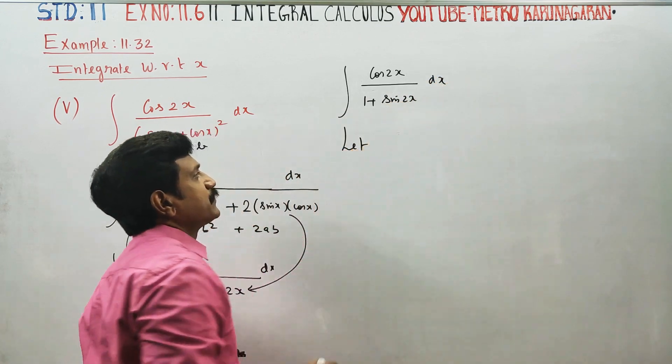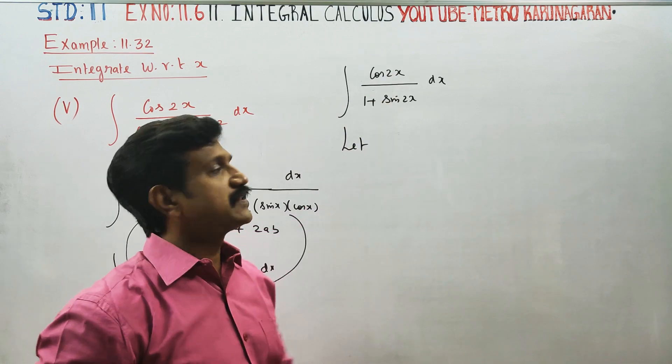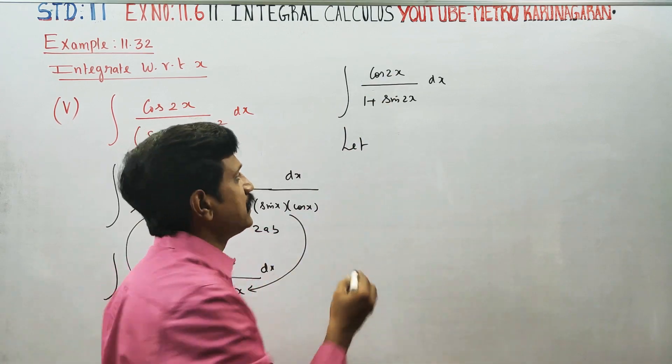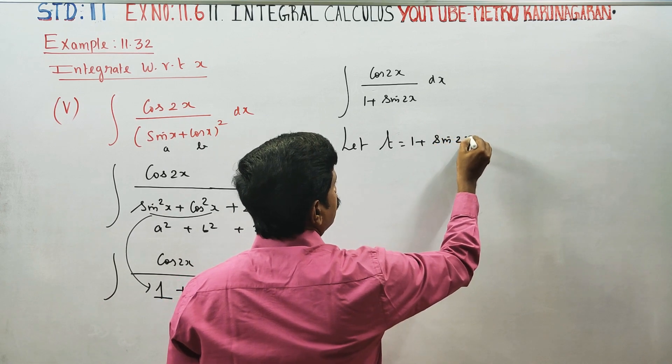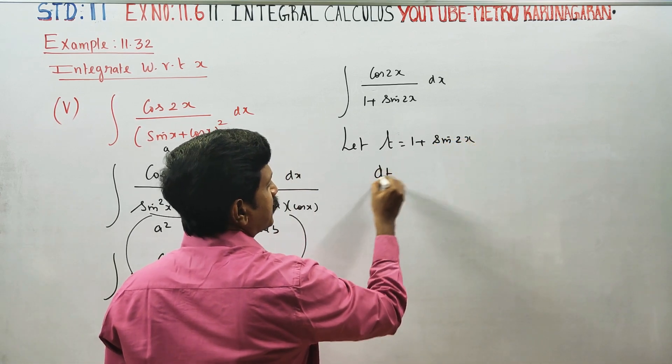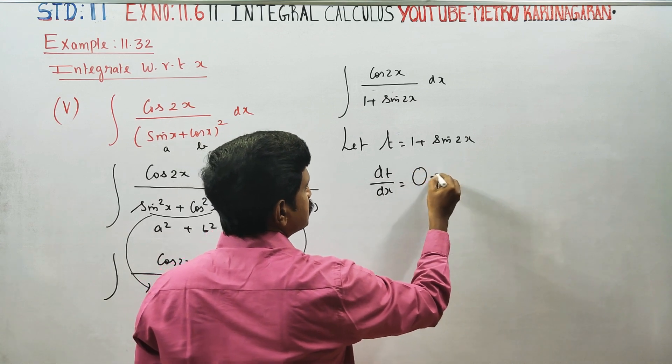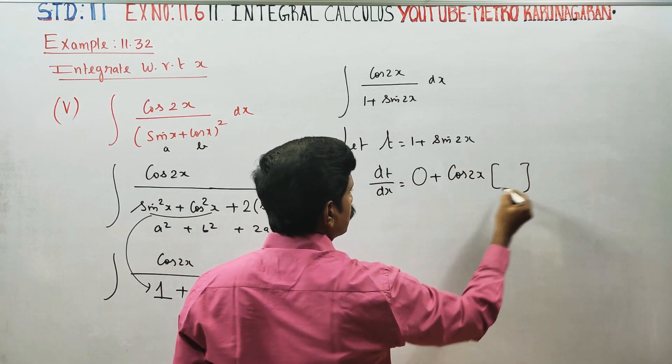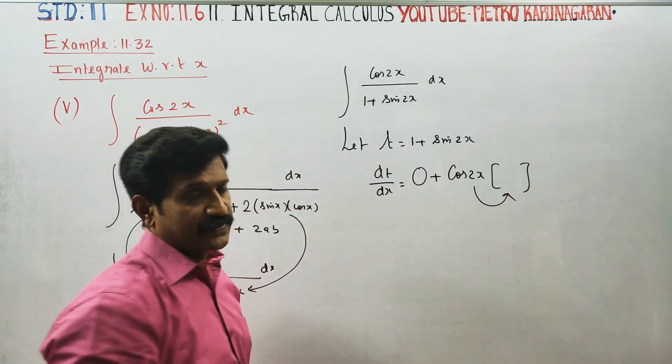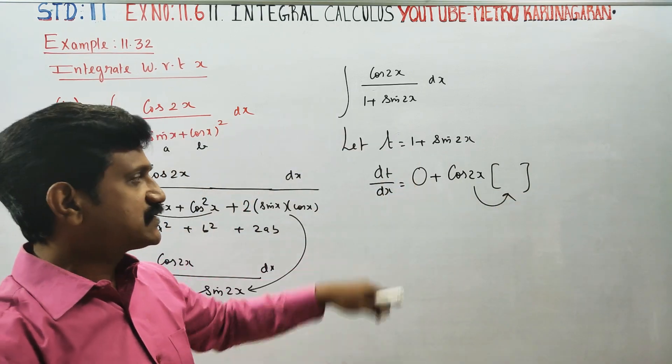When sin differentiates to cos, substitution works well. Let t = 1 + sin(2x). Then dt/dx: the 1 differentiates to 0, sin(2x) differentiates to cos(2x), and by the chain rule, 2x differentiates to 2.